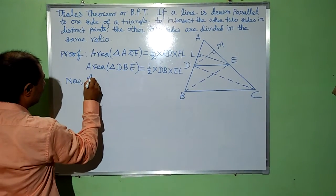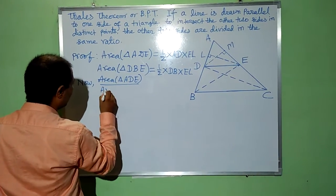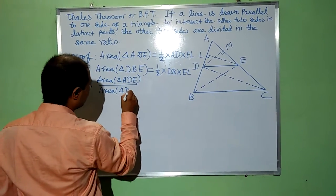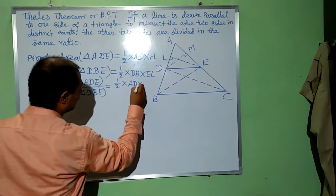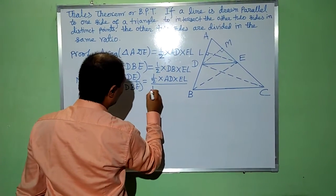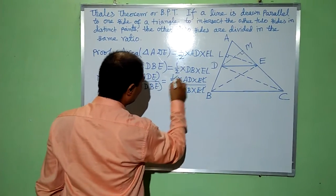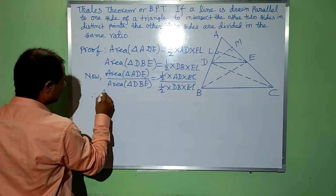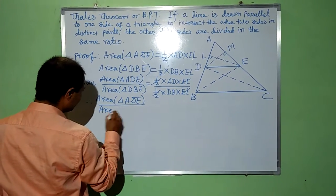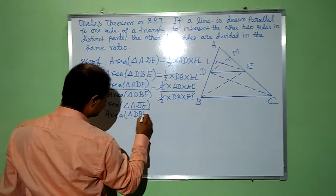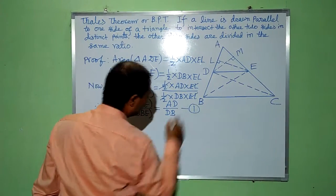Now, area of triangle ADE divided by area of triangle DBE gives us: half into AD into EL, divided by half into DB into EL. The halves and EL cancel out. Hence, area of triangle ADE by area of triangle DBE is equal to AD by DB. This is equation 1.